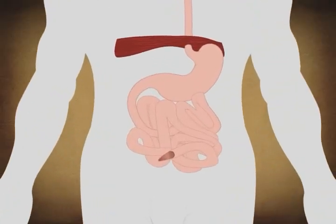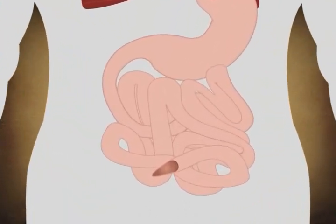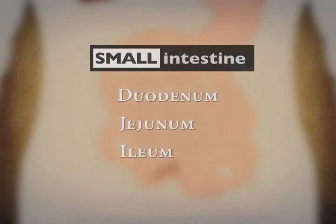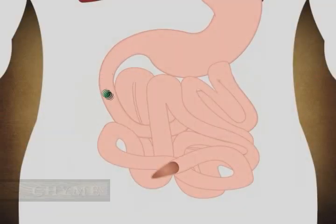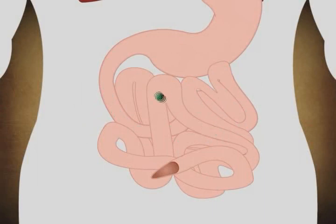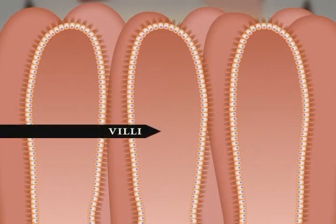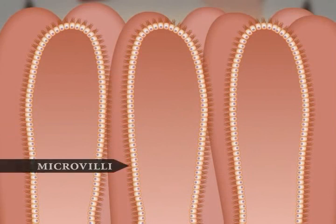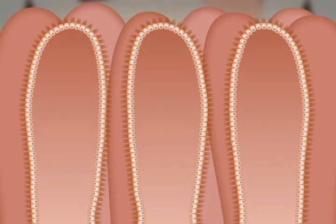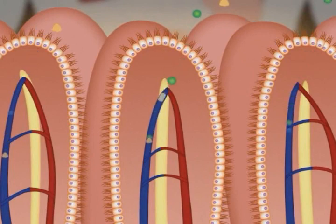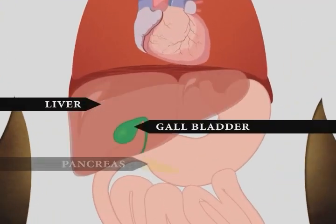The small intestine is a tube about 20 feet long that is bent, folded, and twisted to fit into the abdominal cavity. It has three parts: the duodenum, the jejunum, and the ilium. Chyme enters the duodenum, which is about 10 inches long, then passes to the jejunum, about 3 feet long, and finally into the ilium, which is about 6 feet long. The lining of the small intestine has villi and microvilli. Villi are finger-like projections on the surface of the intestine, and microvilli are smaller projections stemming from the villi. Each villus contains both blood and lymphatic capillaries. Materials absorbed in the small intestine pass into one of these two capillaries. The liver, gallbladder, and pancreas provide bile, hormones, and digestive enzymes to aid the digestive process.